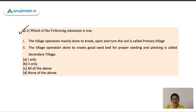The first question for today's session is, which of the following statement is true? First statement is, the tillage operation mainly done to break, open and turn the soil is called primary tillage. Tillage is of two types, primary and secondary. So primary tillage is the first tillage that you do after harvesting of your crop. Once the crop is harvested and the field is grassed and then you want to break this soil, the soil is compacted at this time. So this works in our primary tillage. This is done with the help of plows like disc plow, rotary plow. So plow is a primary tillage implement.